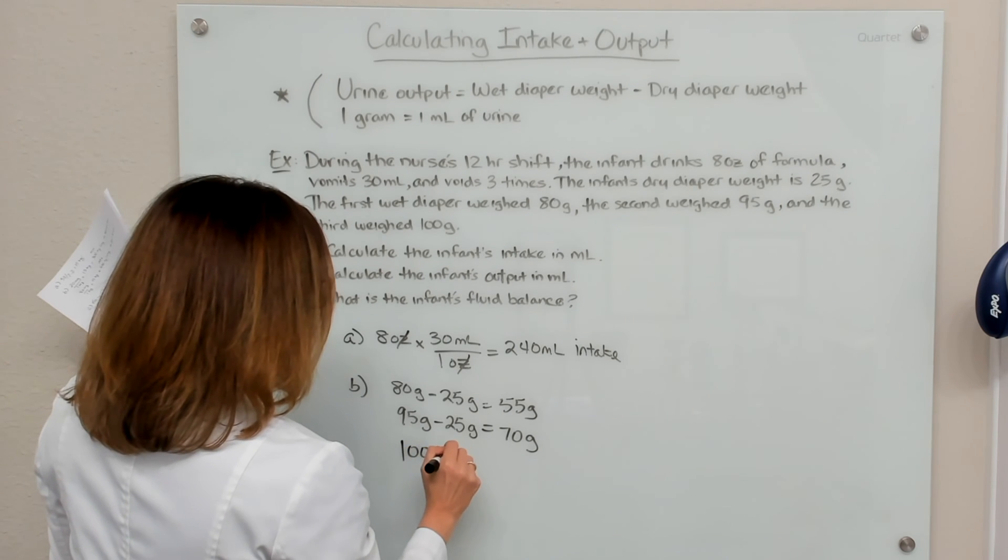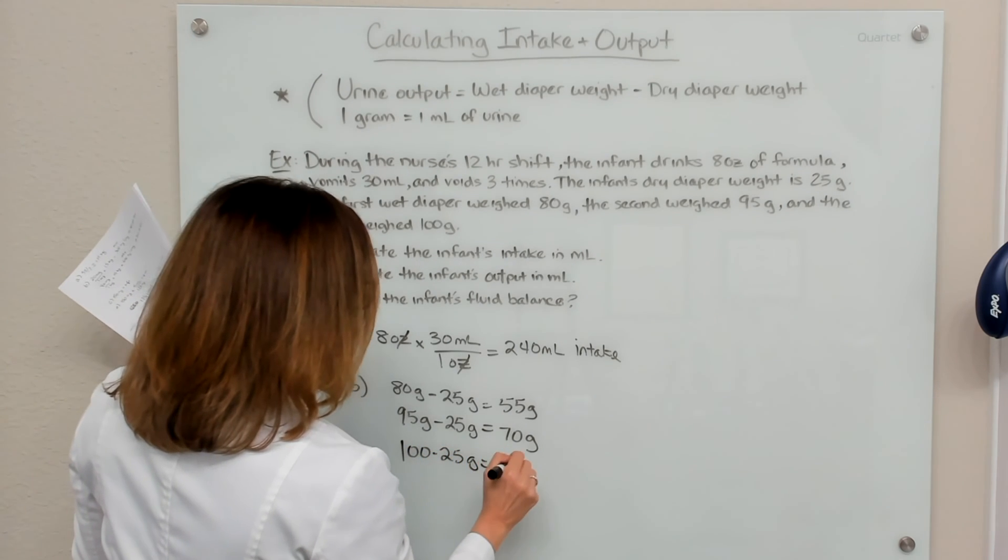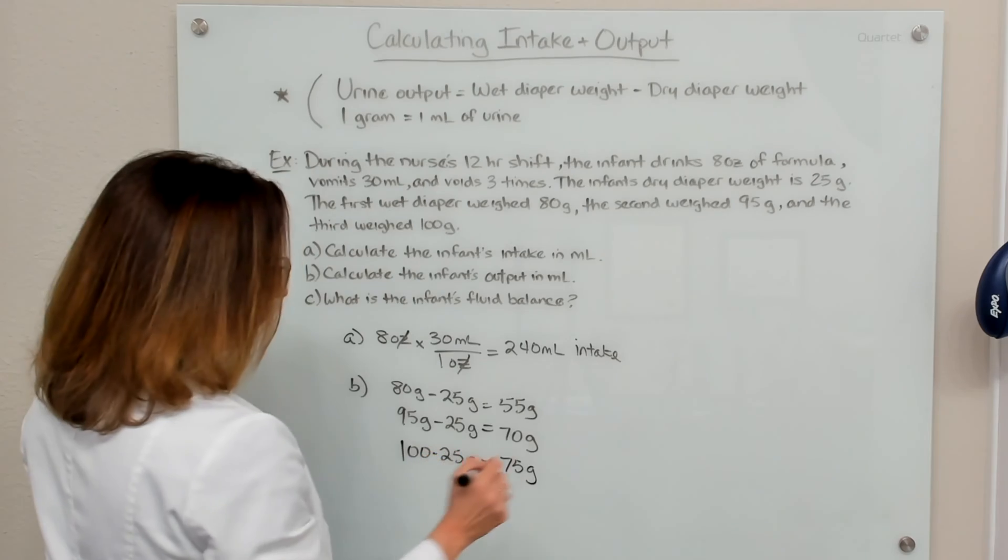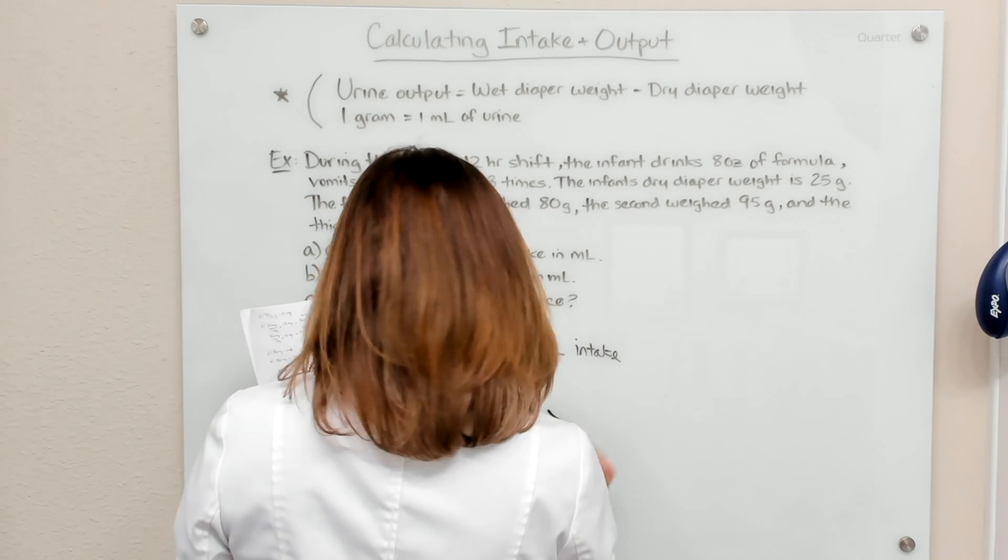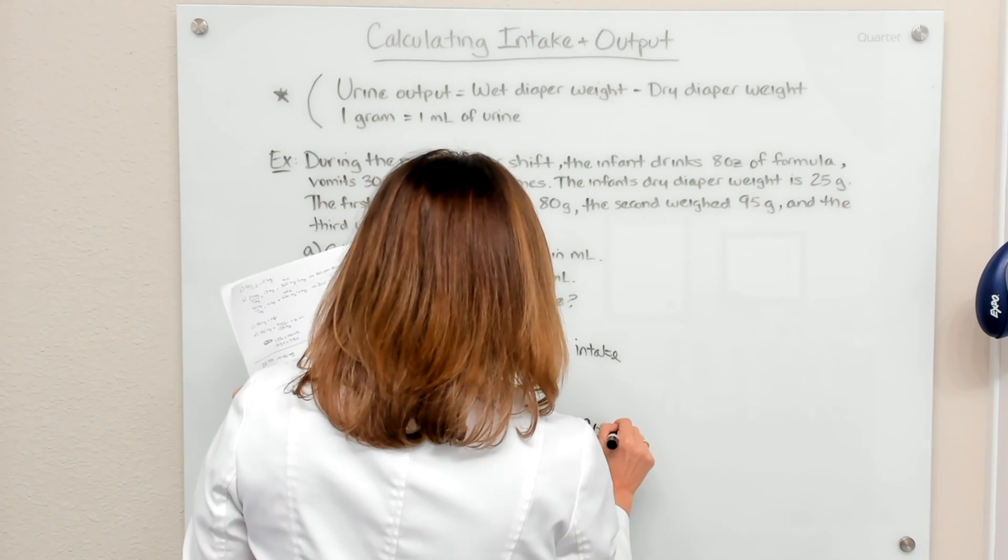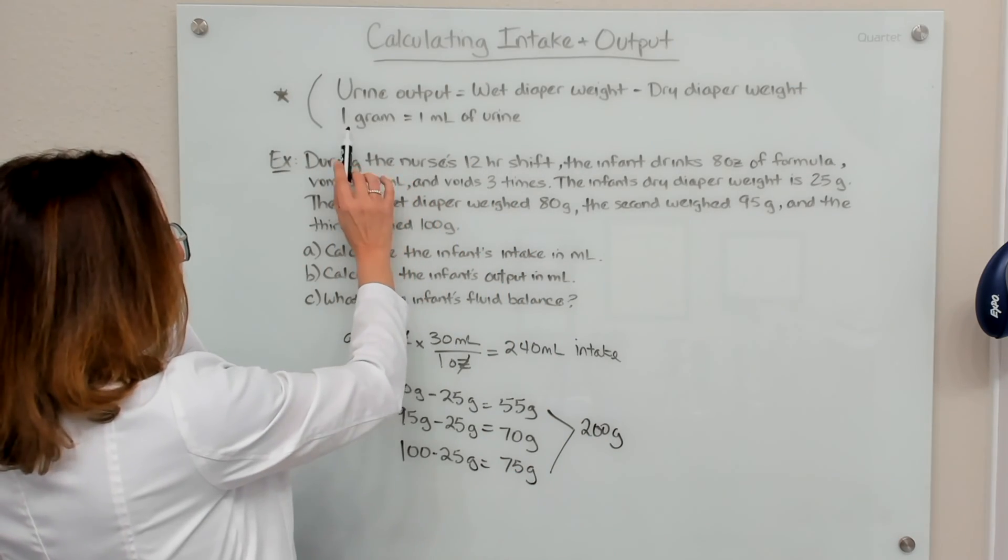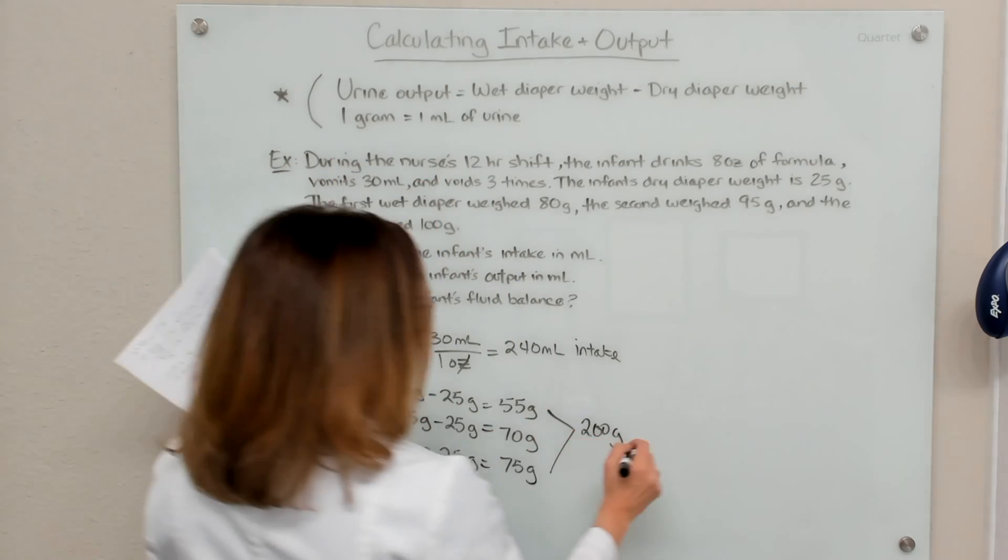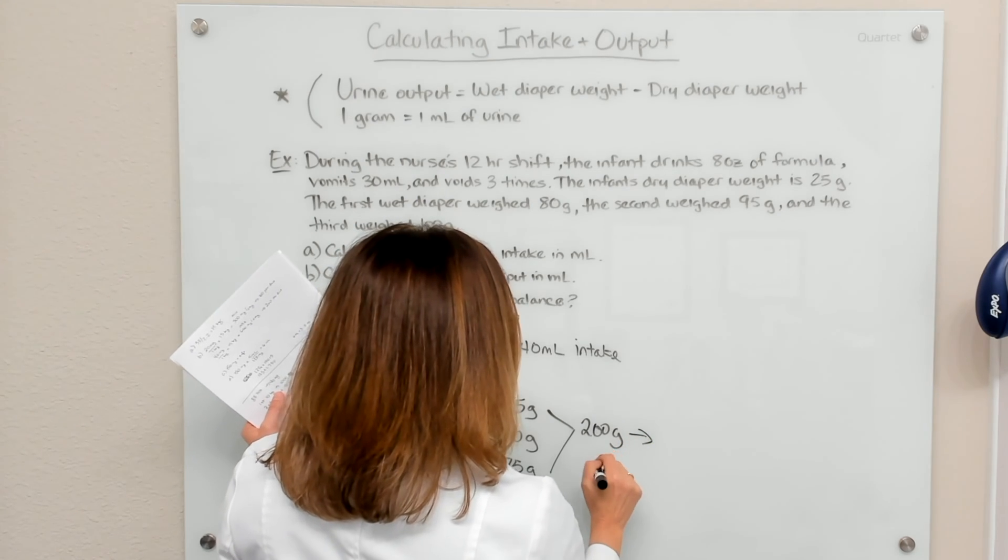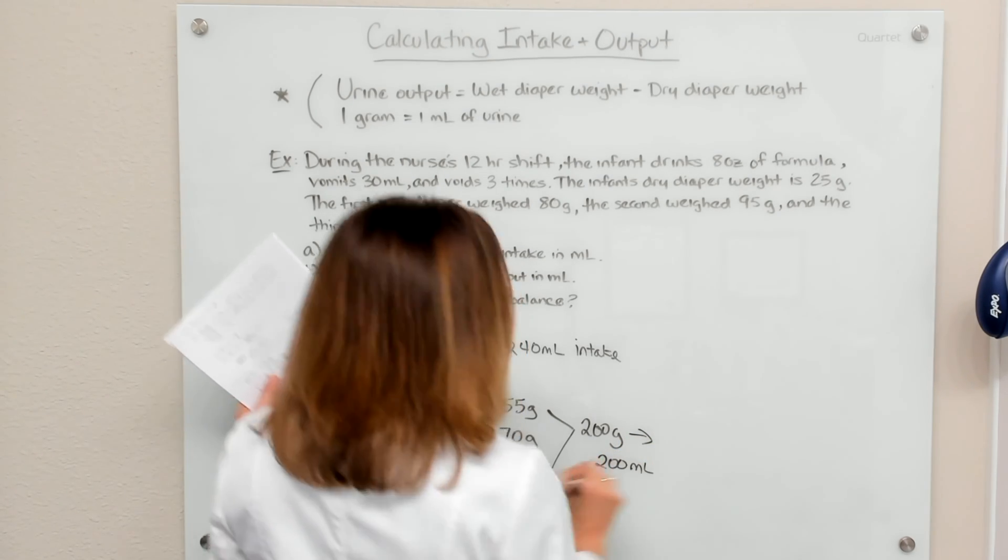And then our third diaper was 100 grams. So 100 minus 25 equals 75 grams. So if I add all this up together, that's 200 grams of urine output. And like I shared earlier, one gram equals one ml. So this 200 grams becomes 200 mls of urine output.